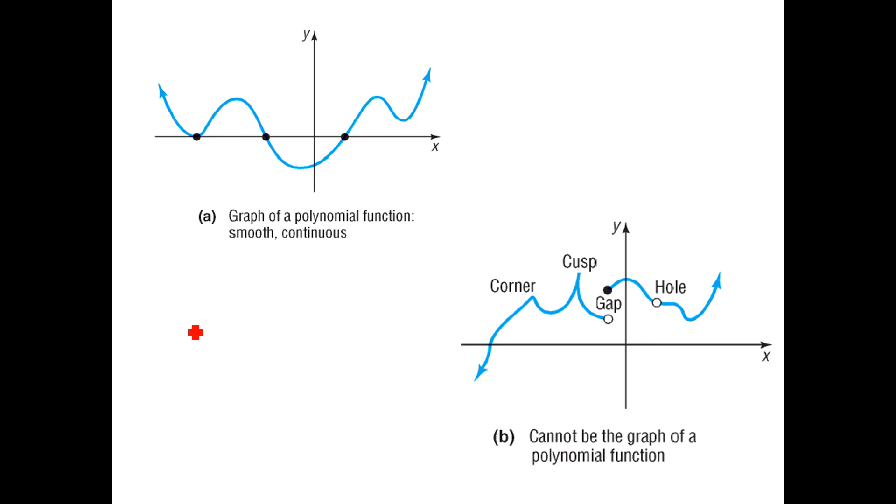All right, so let's talk about polynomials, what they look like if we graph them. So two very important things make you not a polynomial. Sharp edges called cusps, and gaps are not going to be polynomials. If we're smooth and continuous, we get to be a polynomial function.